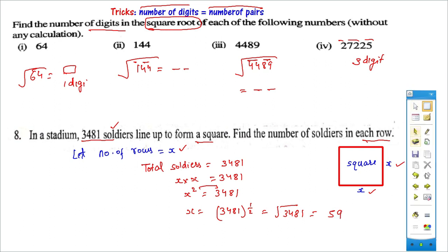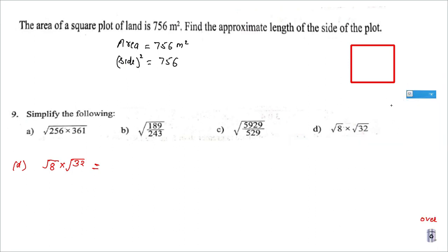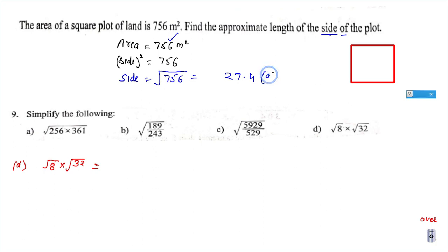Let's go for the next one — the last slide of our video. The question is: area is given as 756. We need to find the side of the square. The formula for area of a square is side × side. One side is what we need. So I will find the Square Root of 756 using long division. The answer is approximately 27.4. The long division method is the best method here.